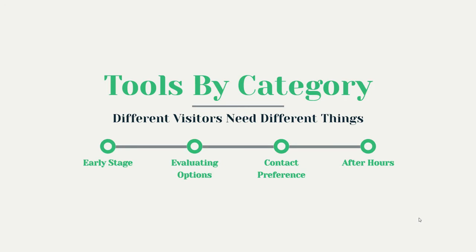We have four general categories. The first is early stage website visitors. Then we have those evaluating their options, those ready to contact you by their preferred method, and the fourth category is after hours — any time someone wants to make contact with you but isn't able to based on your availability.